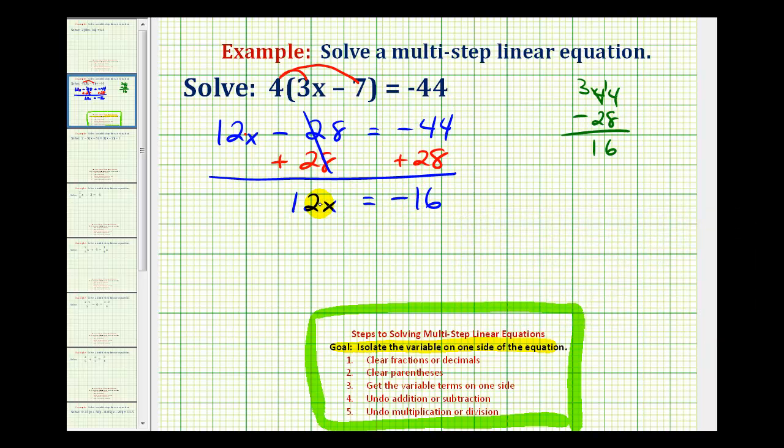And then again, our last step is to undo this multiplication, so we'll have to divide both sides by positive twelve. Twelve divided by twelve is equal to one, and one times x is x, so now we've isolated x.